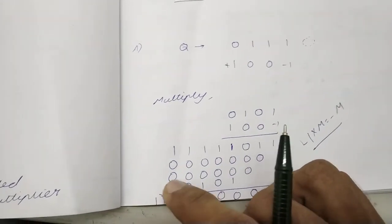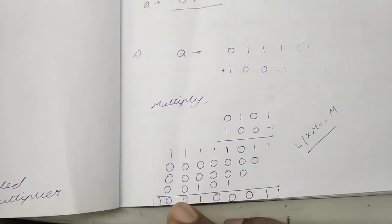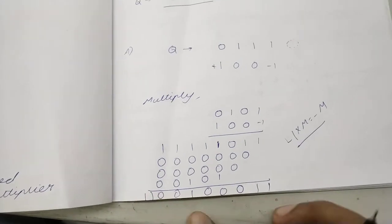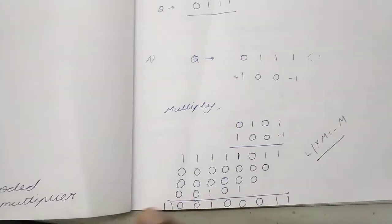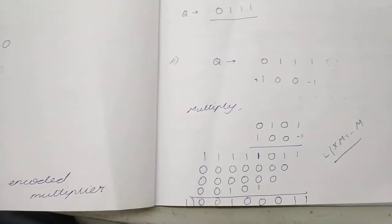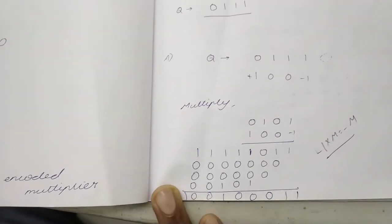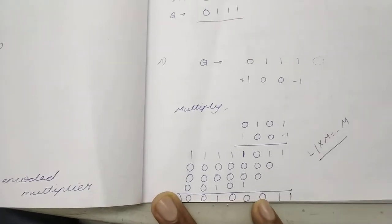And zero because it's a positive number, we append the sign bit as zero. After addition we finally get one extra bit, but total we take only eight bits: one, two, three, four, five, six, seven, eight. The ninth bit we'll neglect.